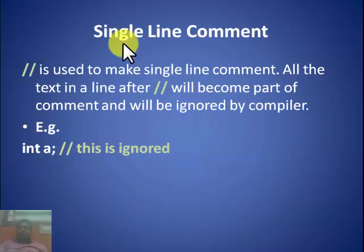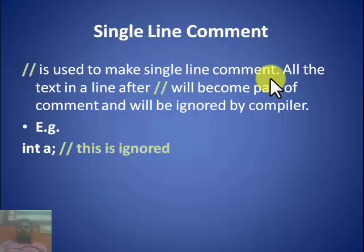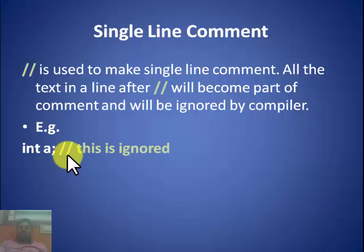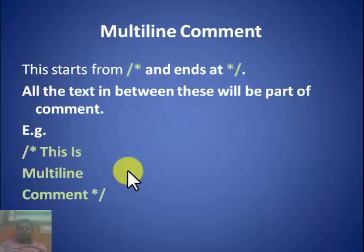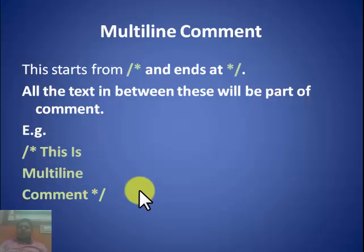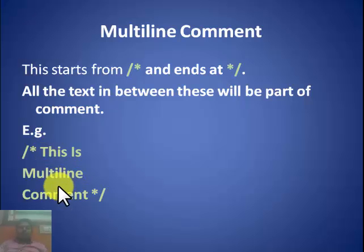There are two types of comments: single-line and multi-line. A single-line comment uses double slash (//) — all text in a line after // becomes part of the comment and is ignored by the compiler. A multi-line comment starts with /* and ends with */ — all text between these markers is treated as a comment and the compiler will skip it entirely.